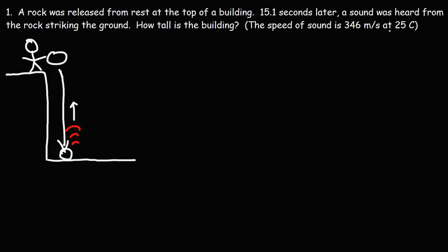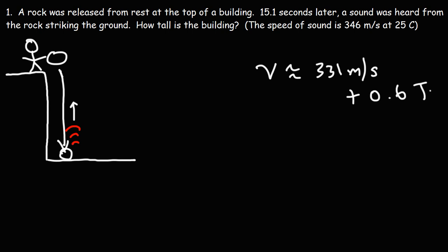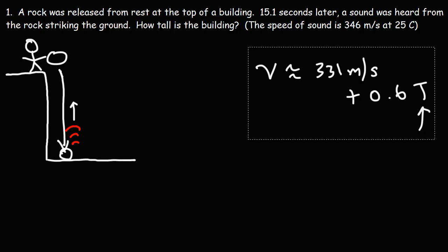We're given the speed of sound at this temperature. The speed of sound is approximately 331 meters per second plus 0.6 times the temperature in Celsius. The temperature matters because the speed at which sound travels through air is dependent on temperature. So if you plug in 25 degrees Celsius — 331 plus 0.6 times 25 — you get 346 meters per second. That's going to be the speed of sound in this problem at that temperature.